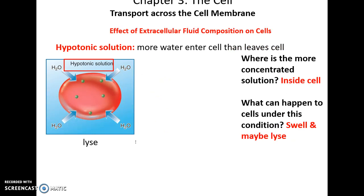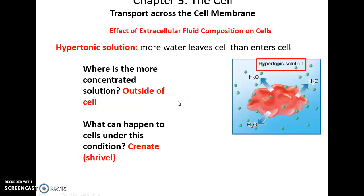Sometimes a cell might find itself in a hypotonic solution. A hypotonic solution is very dilute compared to inside of a cell — there is more water outside than inside. The water will enter the cell, causing it to swell, and in some cases even lyse or burst, killing the cell. Sometimes cells are in hypertonic solutions. Here, the solution outside of the cell is very highly concentrated in solutes — little water outside, lots of water inside. The water will leave the cell; this net movement of water will cause the cell to shrivel, or crenate, and this can also kill the cell.